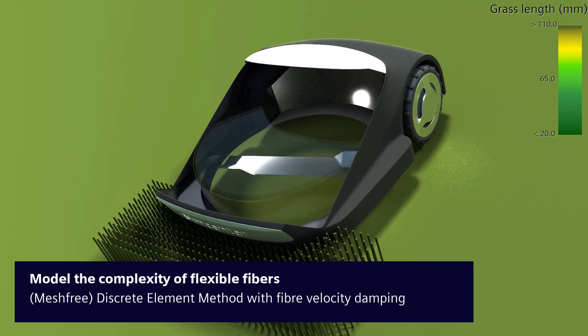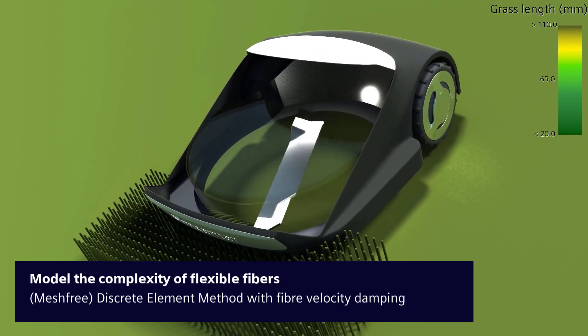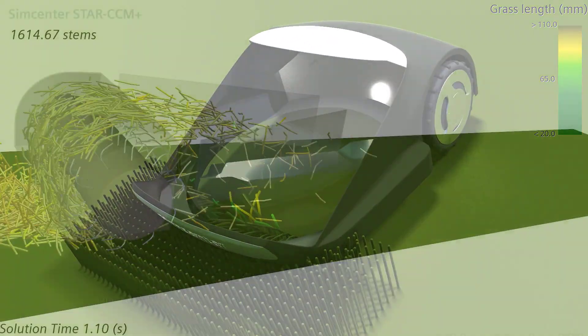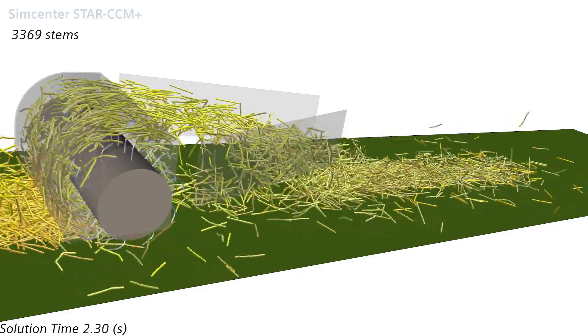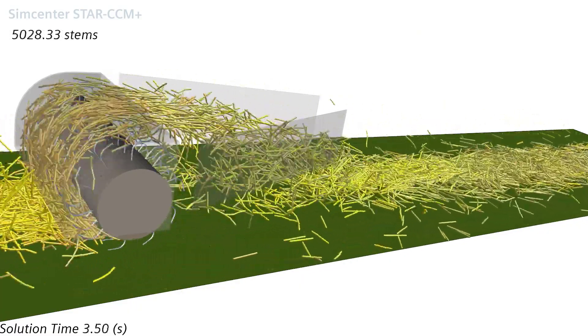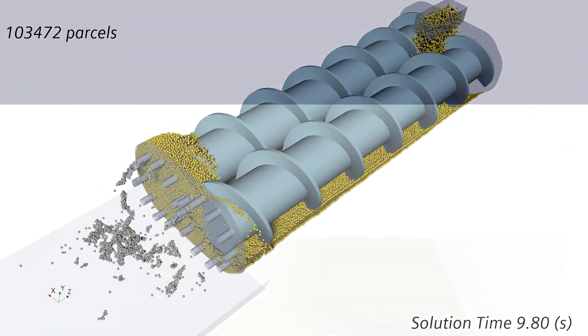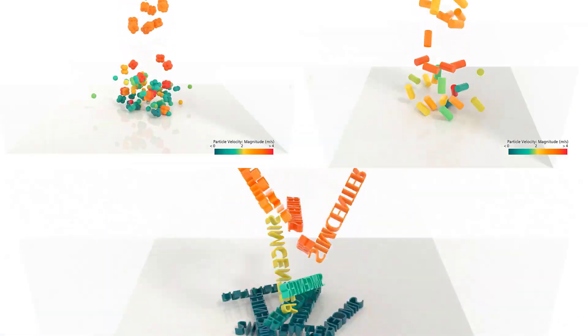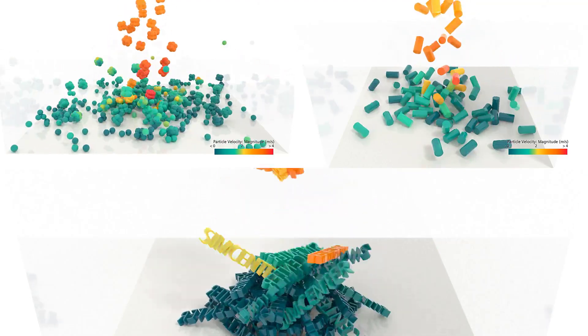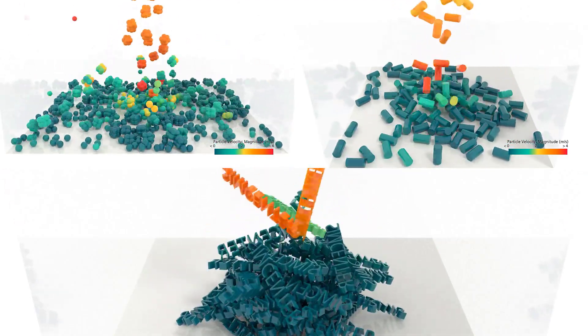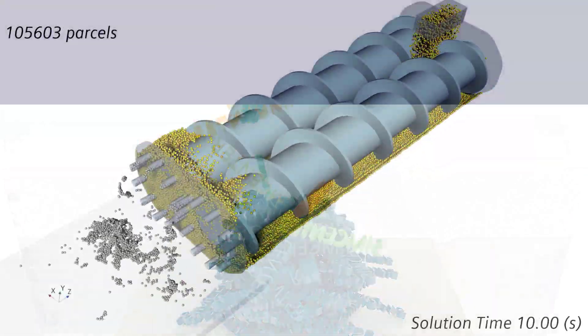Many bulk material and fiber handling applications in the process, heavy equipment or agricultural industry require physical fidelity paired with efficient simulation methods. With the introduction of Mesh Free DEM in Simcenter STAR-CCM+ 2021.3, we started our efforts to significantly speed up such simulations.